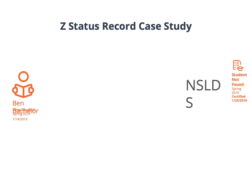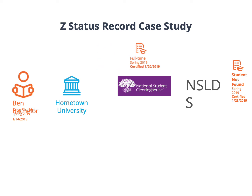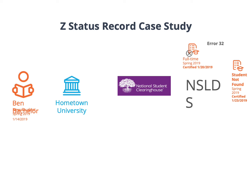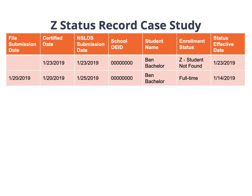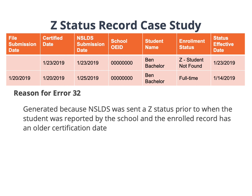Now we will go over a case study on this scenario. Ben Batchelor is a new student at Hometown University. Hometown University reports Ben as full-time on their first-of-term file, which is reported to NSLDS. After reporting this enrolled status to NSLDS, an Error 32 was returned. The error was returned because NSLDS was sent a Z status prior to when Hometown University reported Ben as enrolled, and the certification date on Ben's record was before the certification date of the Z status.